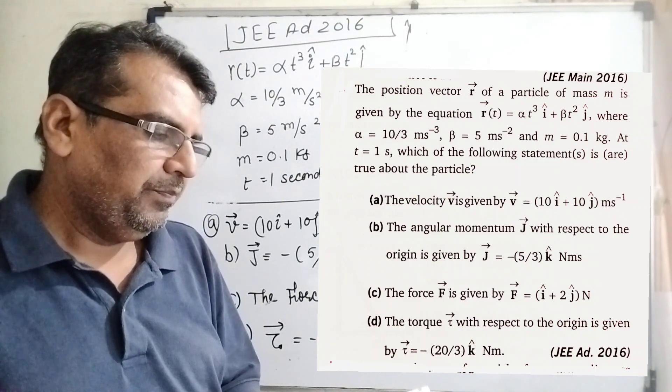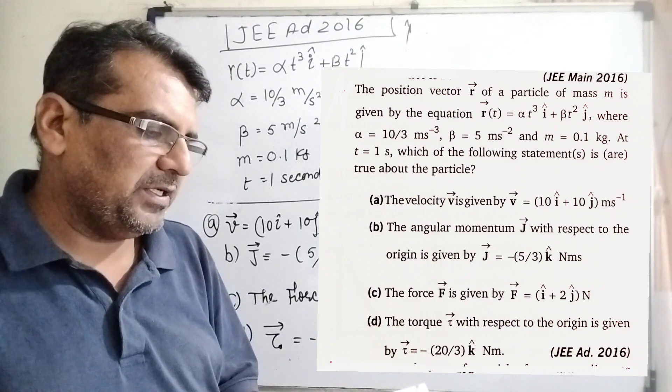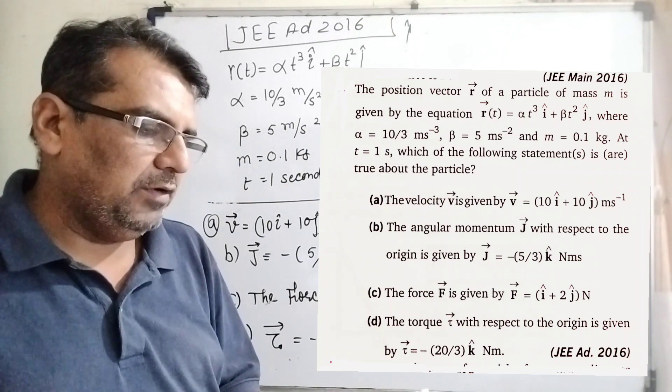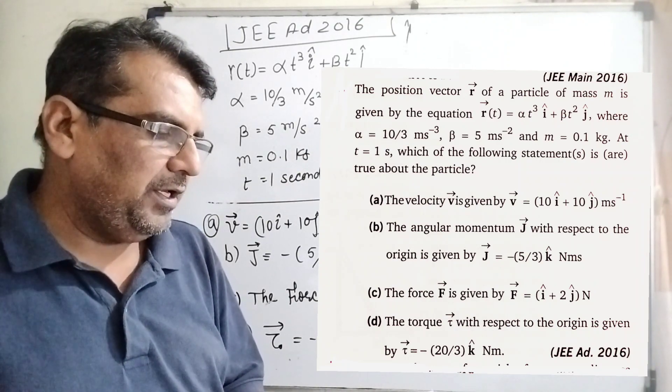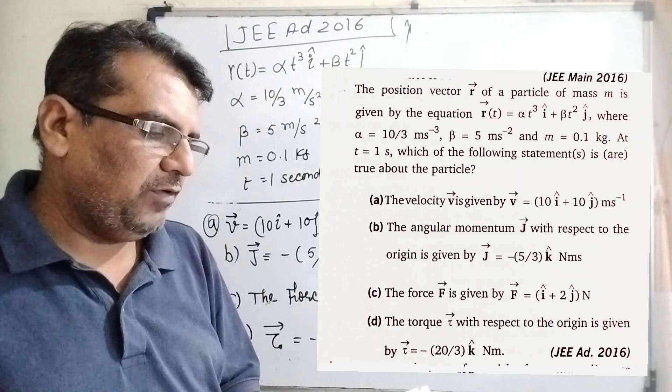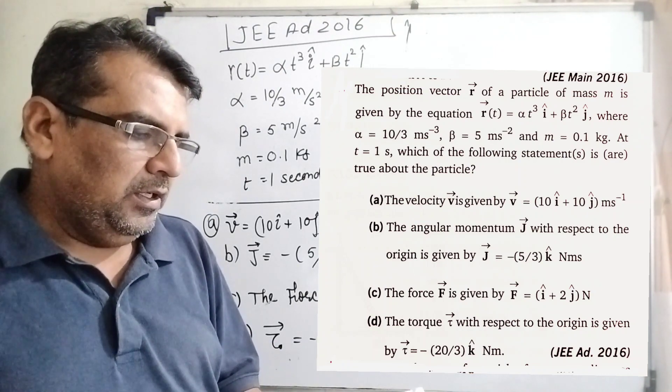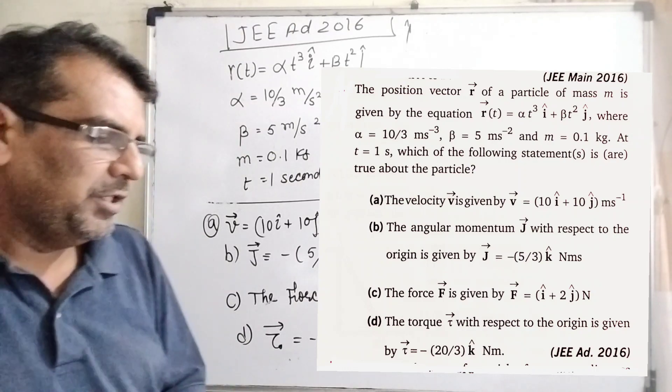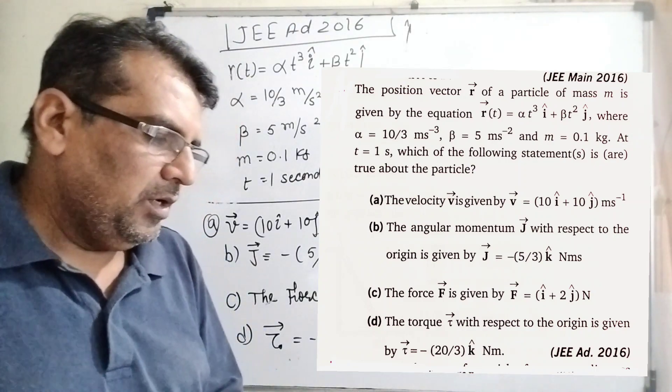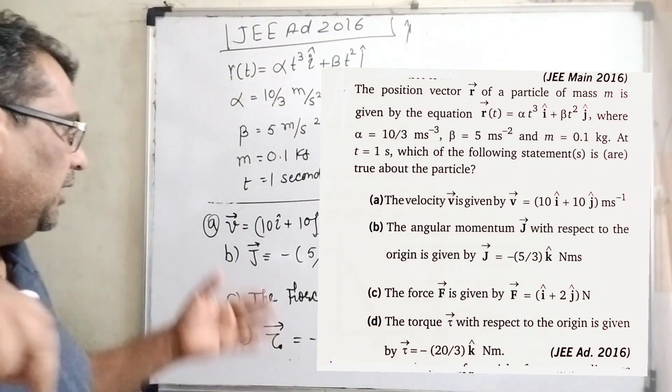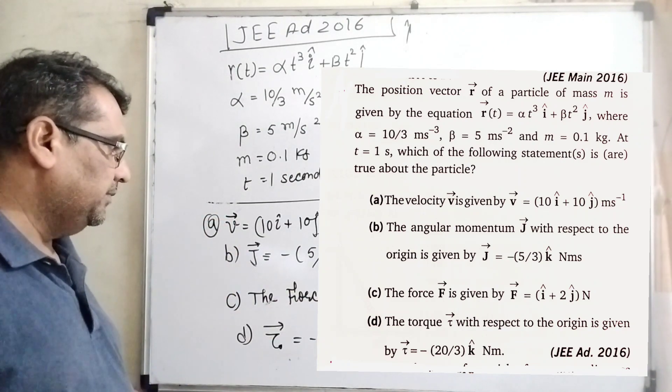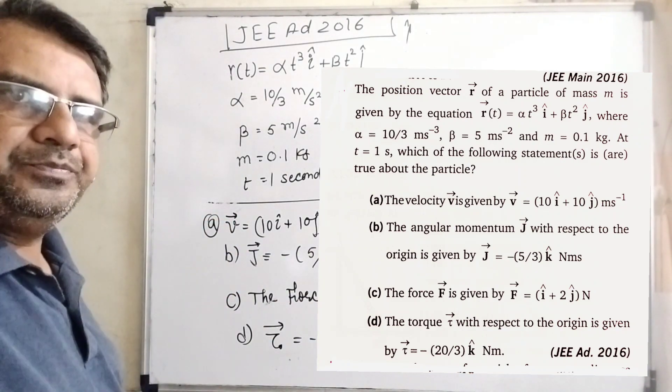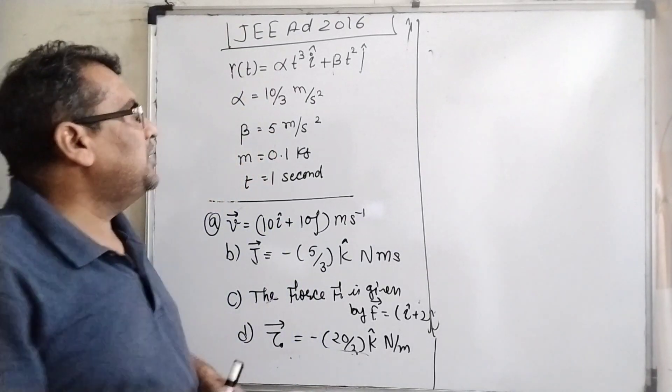Where α = 10/3 meter per second squared, β = 5 meter per second squared, and m = 0.1 kilogram. At t = 1 second, which of the following statements is true about the particle? It's a multiple choice question.